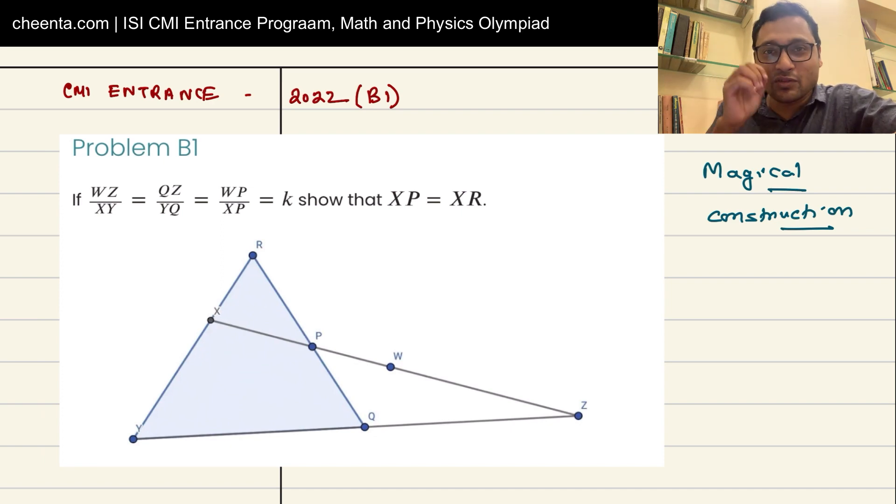Simple, elegant, and beautiful construction. So this is an example of such a problem. It's not that hard. It came up in CMI entrance 2022, but it can also come up in other Olympiads, American mathematics competition, and so on.